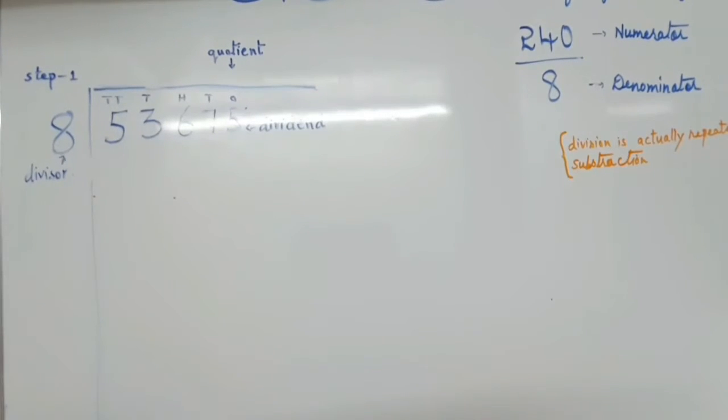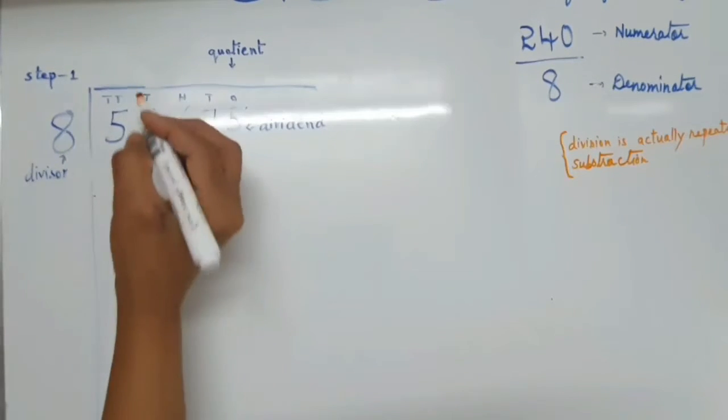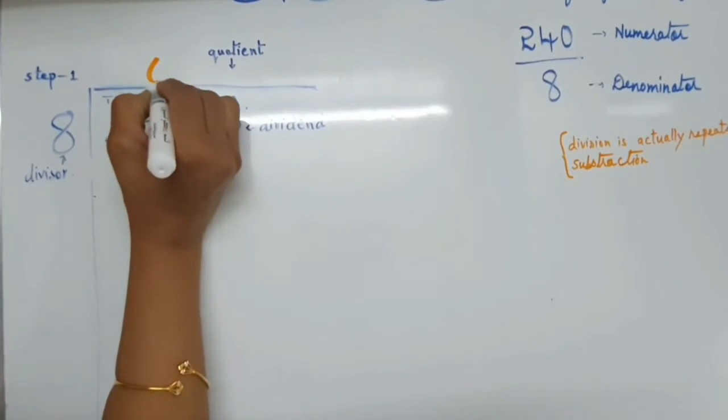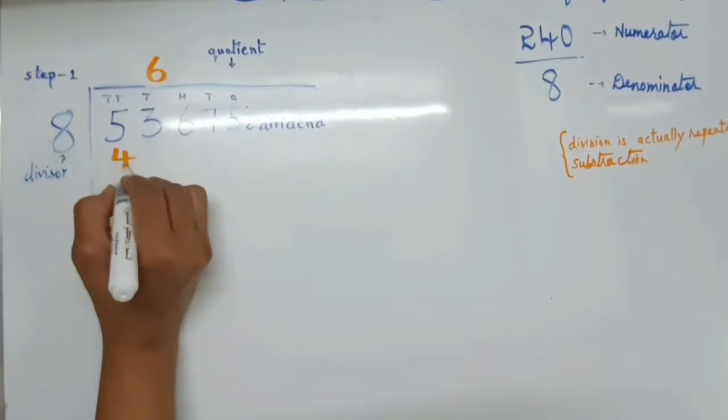So, 8 ones are 8. Like that we have to count up to 53 or above. So we have to count: 8 sevens are 56, 8 sixes are 48.